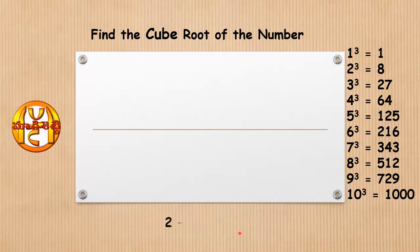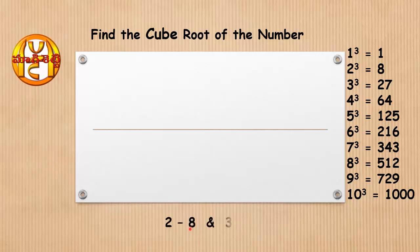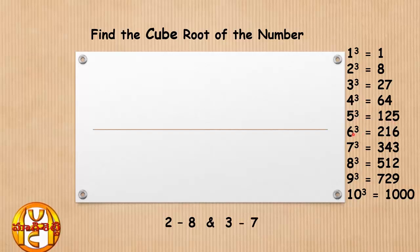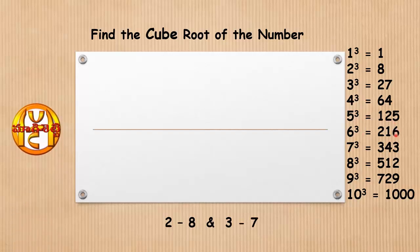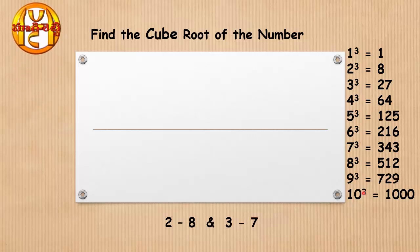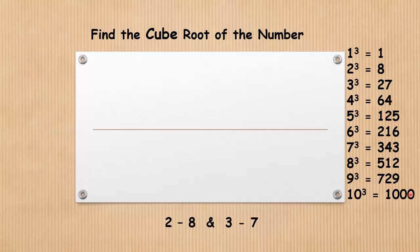So here we have two conjugate pairs: 2–8 and 3–7. If you observe the remaining values: 4 cube has 4, 5 cube has 5, 6 cube has 6, 9 cube has 9, and 10 cube has 0 — each has the same digit in its units place.